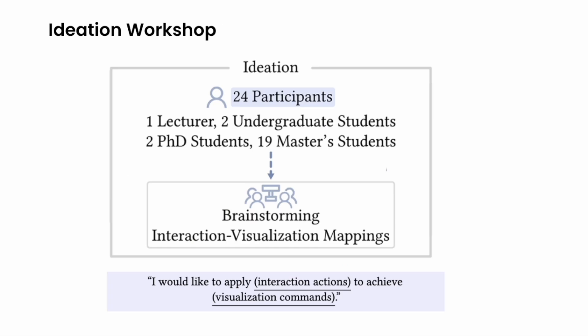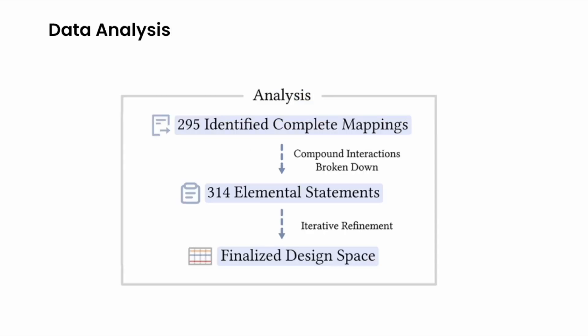We invited 24 participants, including one lecturer, two PhD students, 19 master's students, and two undergraduate students. They were given specific data tasks and asked to brainstorm possible mappings by filling out what interaction actions they would like to use for achieving specific visualization commands. A total of 295 completed mappings were collected from the ideation workshop. After transcription, compound interactions were broken down and these mappings were parsed into 314 elemental statements. Two researchers then individually coded the elemental statements to form the finalized design space.